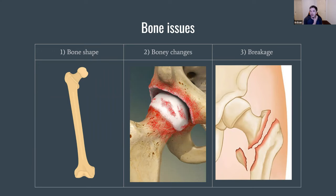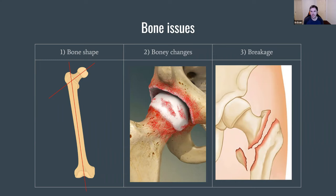Let's talk about bony issues. The first is bone shape — sometimes bones aren't formed correctly and angles vary between people. For example, drawing a line through the head of the femur and one through the shaft reveals an angle that varies between individuals, leading to variations. The second is bony changes over time — most commonly osteoarthritis, the wear and tear of a joint, which leads to bony changes and pain. The third would be breakage — breaking a hip is unfortunately not uncommon and has serious implications.